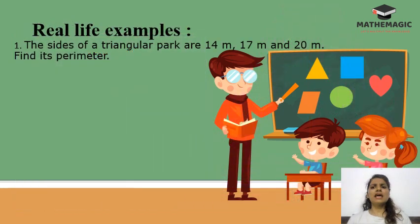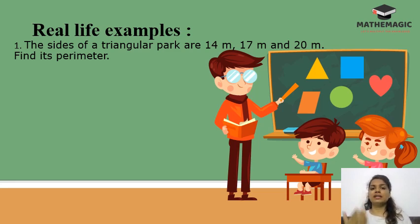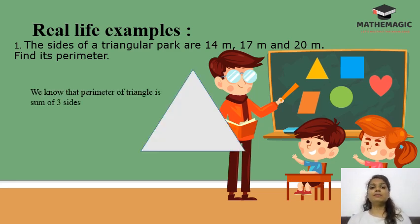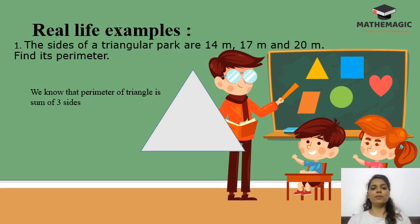Let's look at some real-life examples. The first example is a triangular park whose sides are 14 m, 17 m, and 20 m. Can you find its perimeter? It's easy — just add all the sides: 14 + 17 + 20 = 51 m.